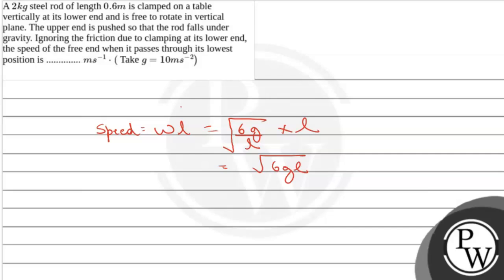Now we put the values. So, speed equals root 6 times 10 times 0.6. So, speed comes out to be 6 meter per second. So, the final answer is, the speed of the free end is 6 meter per second. Hope you understand it, best of luck.